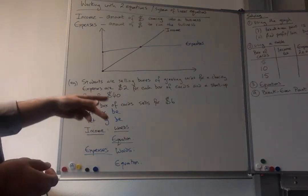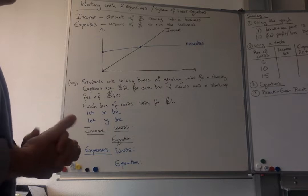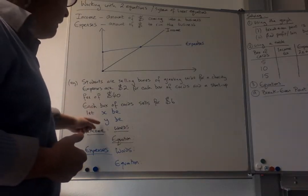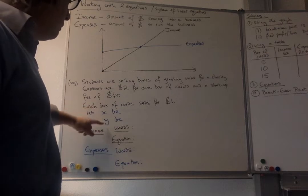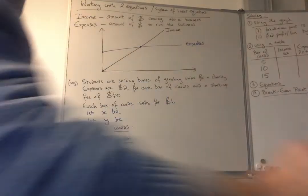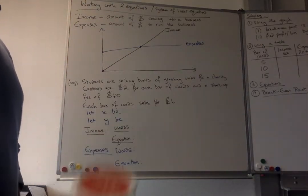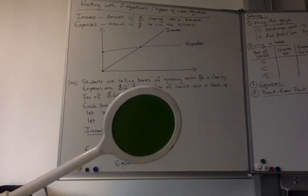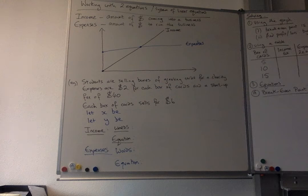And then each box of cards is going to sell for $6. So first of all you have to decide what X and what Y is going to be, or the input and the output, or the independent variable and the dependent variable. So you know the drill, stop the video, write down what you think it is, then come back, and when you're ready press go, and we'll say the right answer.